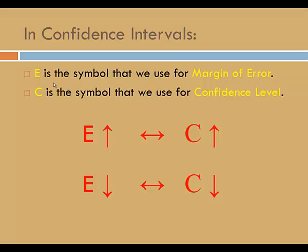In confidence intervals, E is the symbol we use for margin of error. C is the symbol we use for confidence level. As E increases, C increases. In other words, as the margin of error goes up, so does the confidence level. When the margin of error decreases, confidence decreases.